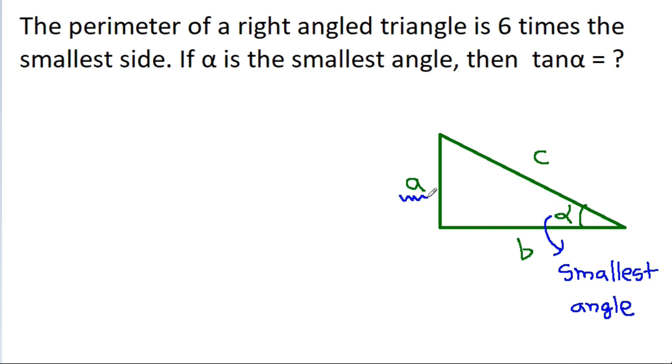The side opposite to the smallest angle will be the smallest side. According to the question, the perimeter equals 6 times the smallest side, which is a. So the perimeter is a + b + c = 6a.